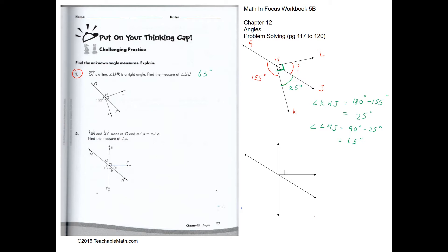Now for Question 2. We have MN and XY meeting at O. The measures of angle A and angle B are the same, and we have to find the measure of angle C. This is O, and this is angle C, which is what we're going to find.